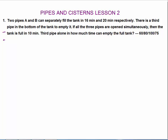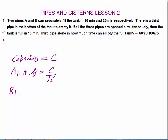As discussed in pipes and systems, there are three variables: one-minute fill rate, time taken, and capacity. Here time is given as 16 minutes and 20 minutes but capacity is not given. Let's assume the capacity of the tank is C liters. To make this convenient, we assume C is a multiple of 16 and 20, that is 80 liters.